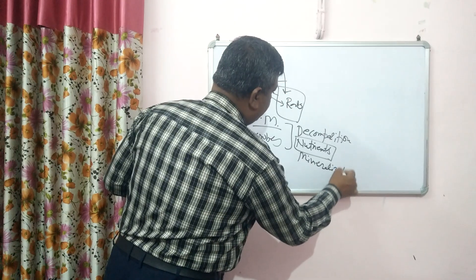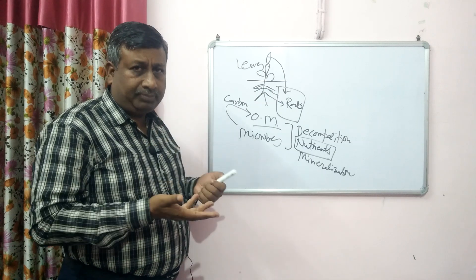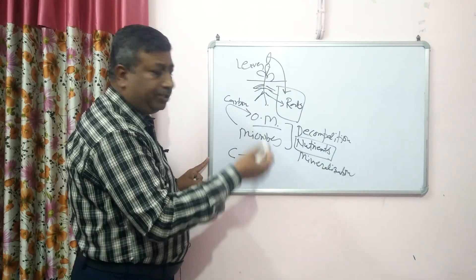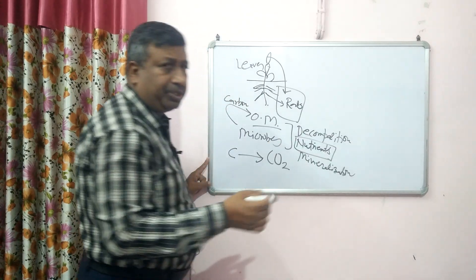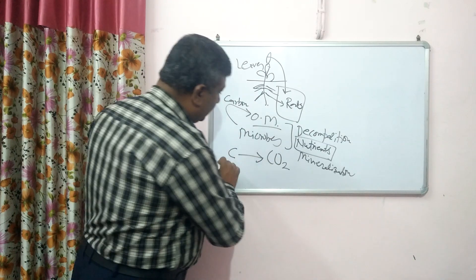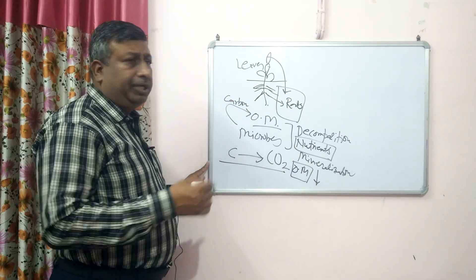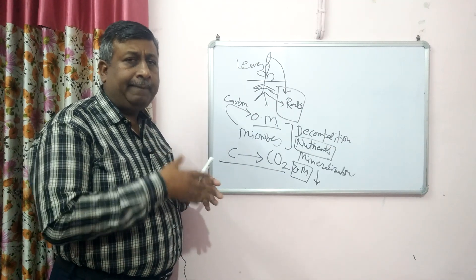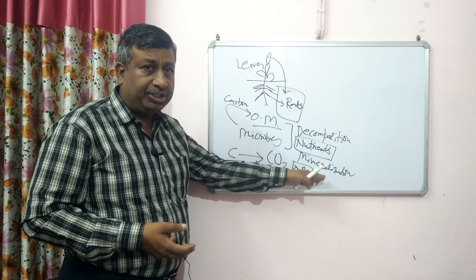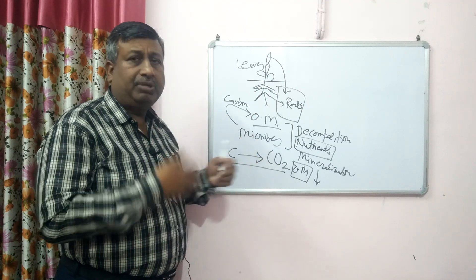Whenever there is decomposition, there is also mineralization. When the organic matter in soil is decomposed, whether by bacteria or fungus, they use carbon in cell synthesis and nutrients are released. Carbon present in organic matter is also lost as CO2. That is why organic matter content decreases with time — by the decomposition process. This is the advantage of decomposition: nutrients are released and are again utilized by the plant.